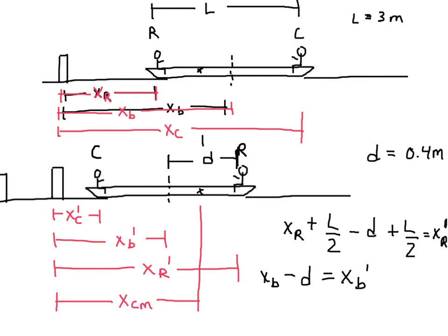Finally, for Carmelita's variables: starting at X sub C, subtract L over 2 to reach the center of the boat, subtract D for the boat's movement, then subtract another L over 2 to reach Carmelita's new position. So: X sub C minus L over 2 minus D minus L over 2 equals X sub C prime. With these equations and the center of mass equations, you should have all the equations you need to solve for Carmelita's mass — and I'll let you figure that one out on your own.